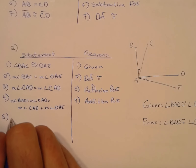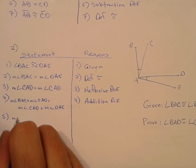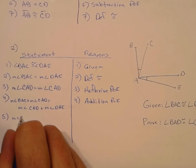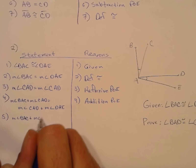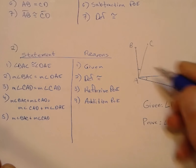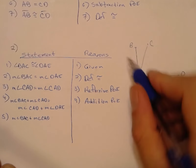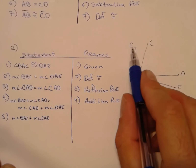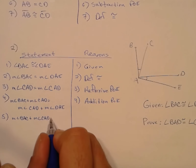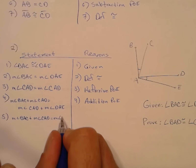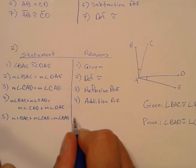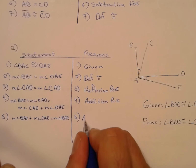But what are these things? The measure of angle BAC plus the measure of angle CAD is really just equal to the measure of angle BAD. And that is, of course, the angle addition postulate.